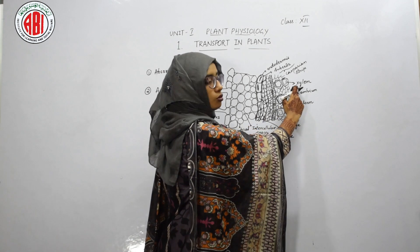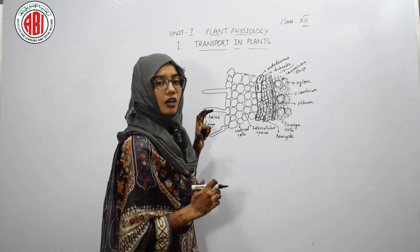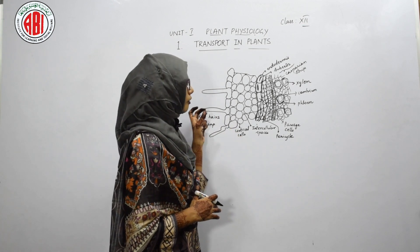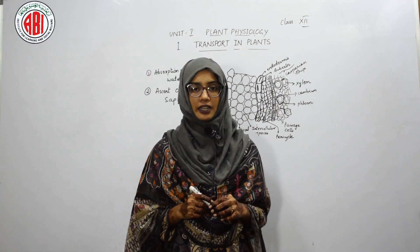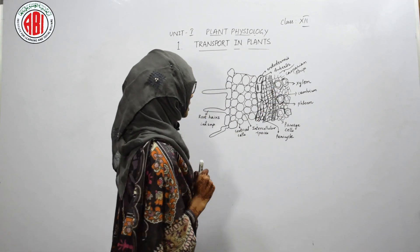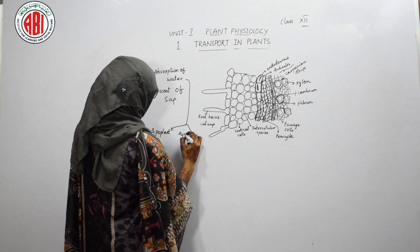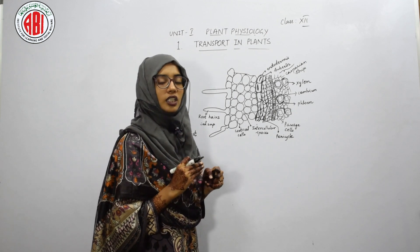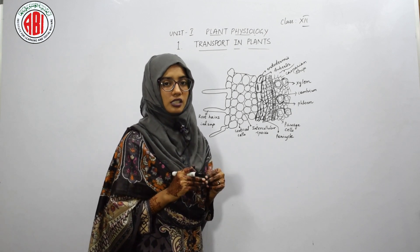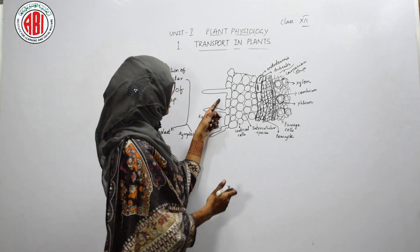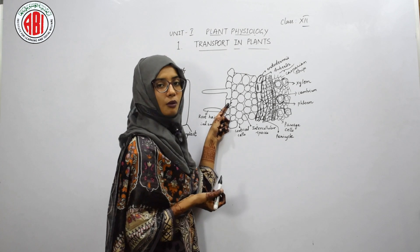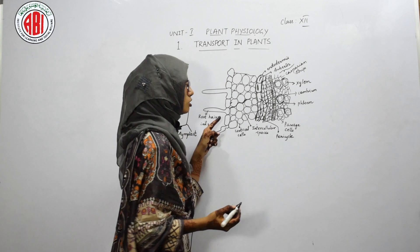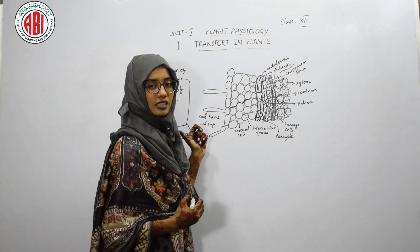The movement of water absorbed from the soil to the xylem takes place by two means: apoplast and symplast. The apoplast movement shows that water moves only through the cell wall or through the intercellular spaces — it cannot cross the membrane of cells. It only moves through the cell wall or through the intercellular spaces. This type of movement is known as apoplast movement.